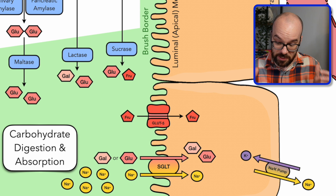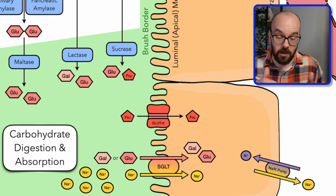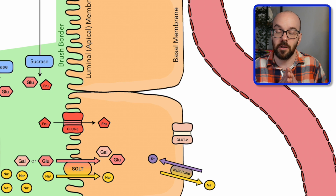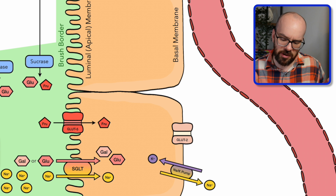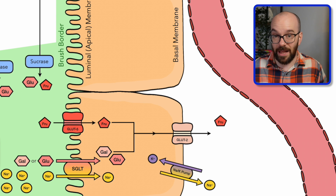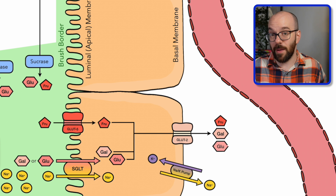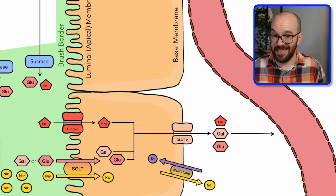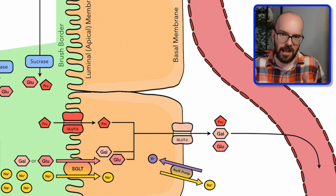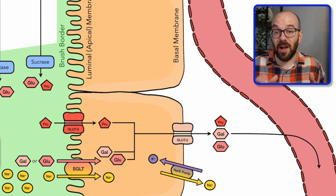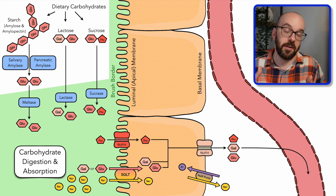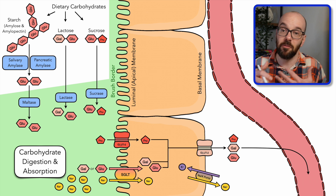Now we have fructose, galactose, and glucose all inside the enterocyte — glucose and galactose actively transported in, fructose passively transported via facilitated diffusion. To get them out of the enterocyte we use a protein transporter called GLUT2, or glucose transporter 2. This transporter is not selective — it lets all three monosaccharides (fructose, galactose, and glucose) passively transport out through the basal membrane and into the capillary. Capillaries are very leaky, allowing fluid, oxygen, and carbon dioxide to pass in and out. And that's the complete process of absorbing dietary carbohydrates into the bloodstream to nourish our cells.